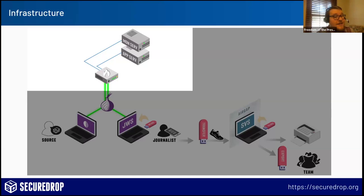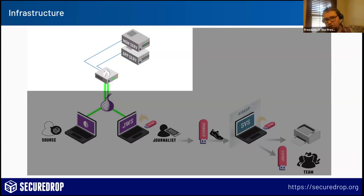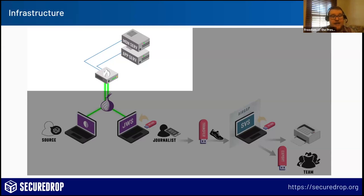If the monitor notices something is off, it creates an encrypted email and sends it to the administrator so they can fix it immediately. Between those two computers and the internet is a dedicated firewall — a gatekeeper that ensures only the minimum necessary traffic flows on the wire. Anything not critical for SecureDrop to work is locked down. You'll also notice in the diagram an image of an onion — SecureDrop doesn't live on the normal internet. There's an extra network on top of the internet called the Tor network, which provides anonymity and encryption. SecureDrop is only accessible via the Tor network.